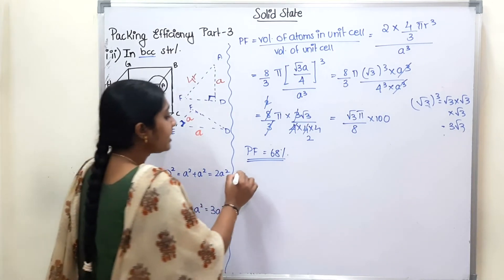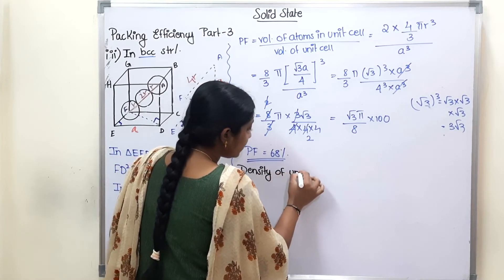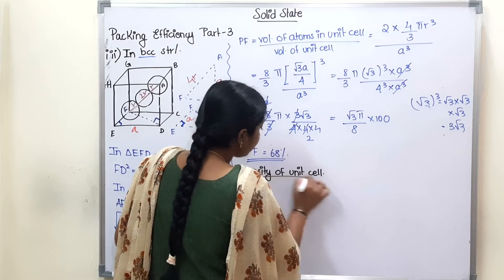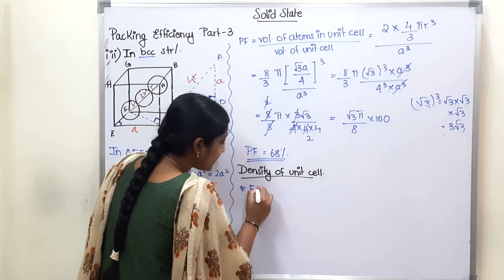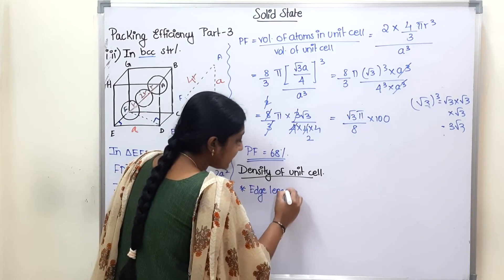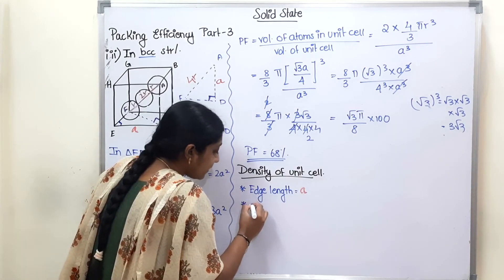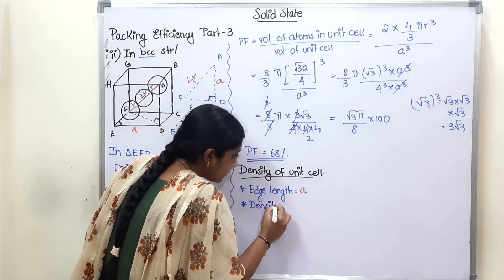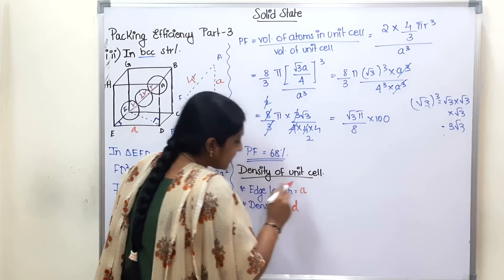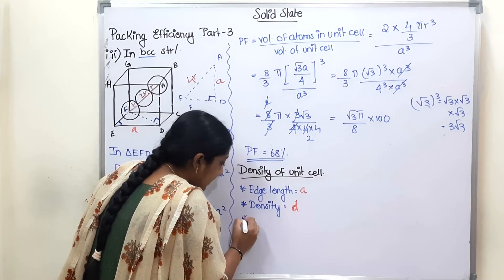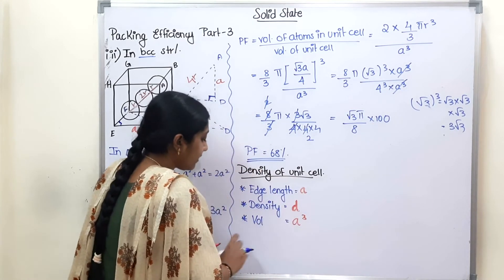The second topic is Density of Unit Cell. What are we calculating? Density. The first term is edge length. The edge length of the cube is side A. The volume of the unit cell is A cubed.